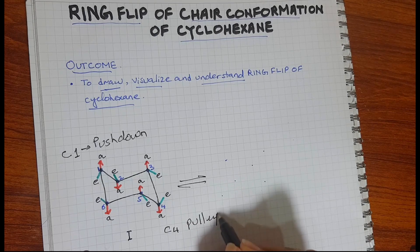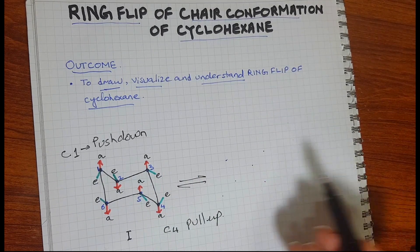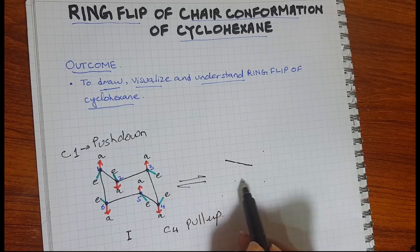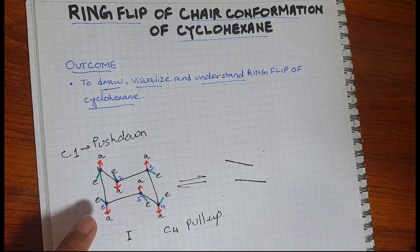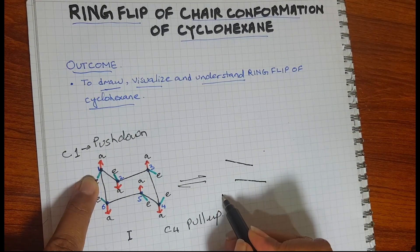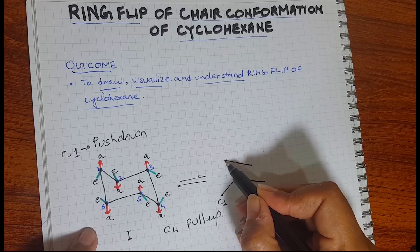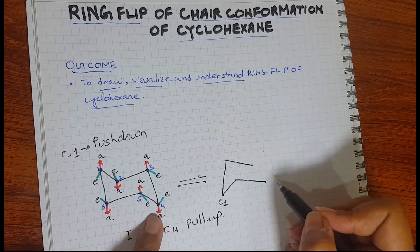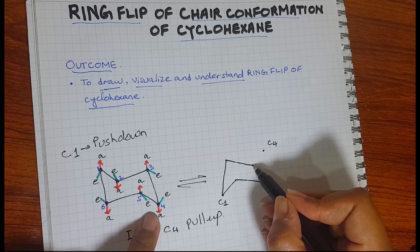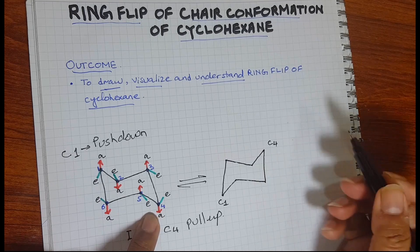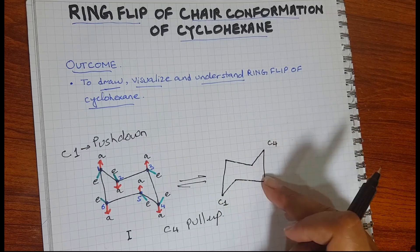Pull the carbon number 4 up to make it headrest. I will first draw these 2 parallel lines. So this point is carbon number 1 after pushing it down, and then carbon number 4, this is carbon 4 and it is pulled up. Here you can see that now carbon 1 has become footrest and carbon 4 has become headrest.